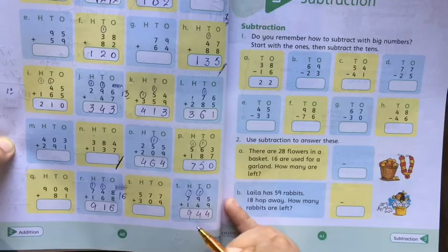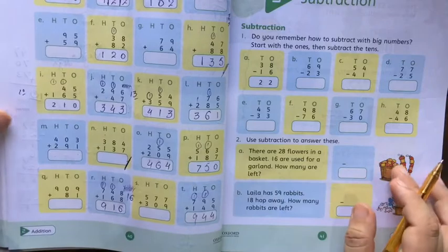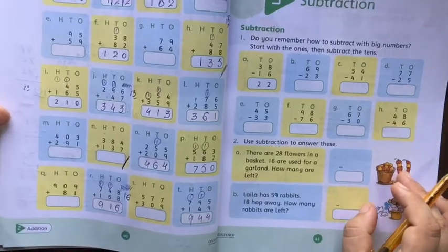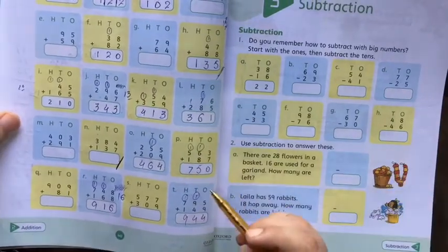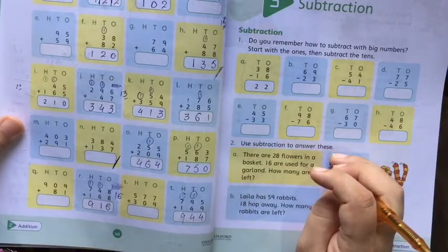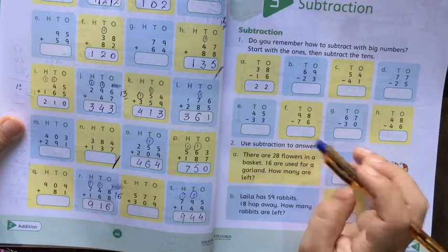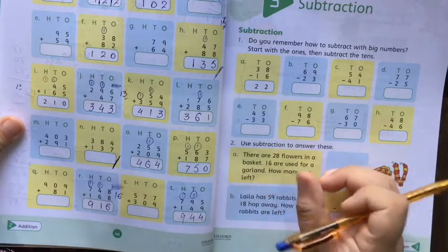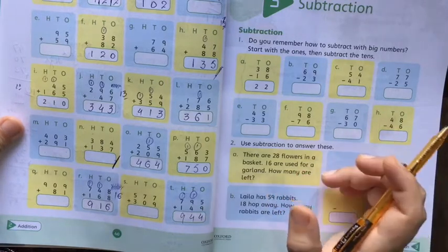Today you have to do on page number 40, first question N onwards up to question T. You have to do addition on these, and you have to solve them properly. Use a pencil or color, draw lines and solve these questions.